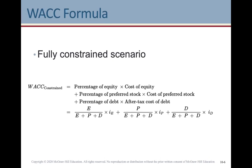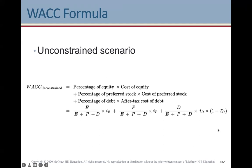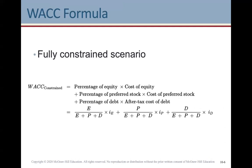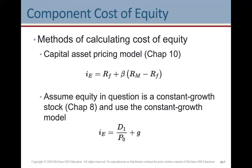For the fully constrained scenario, the formula is the same — the only thing that changes is the last term for debt: there's no tax deduction applied. That tax deduction, which you'll see often in finance calculations, is simply (1 minus the corporate tax rate), accounting for the deduction you get on debt interest.